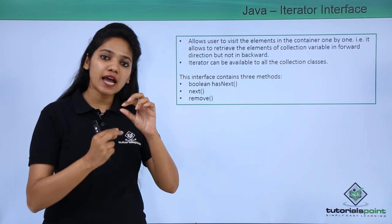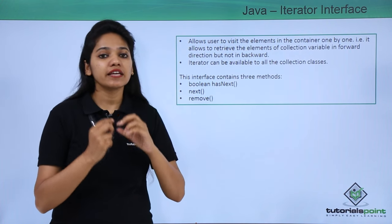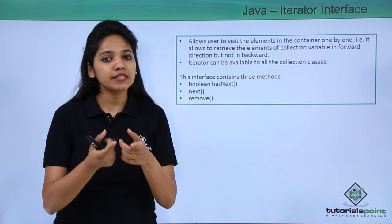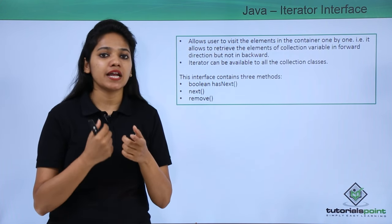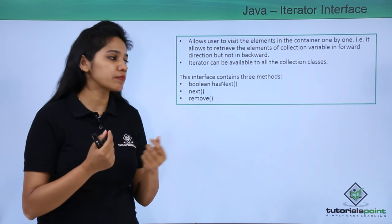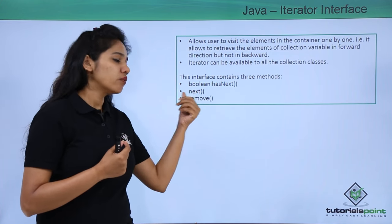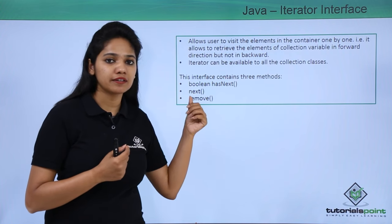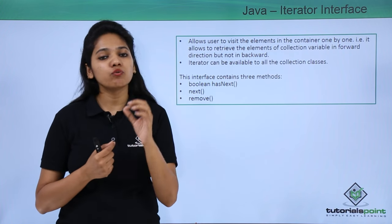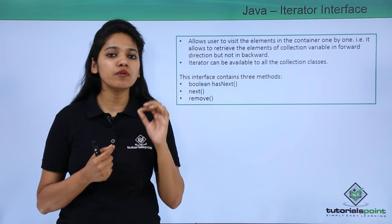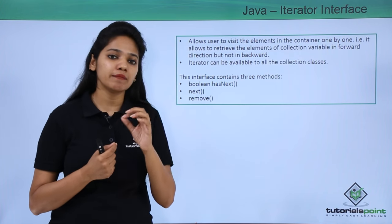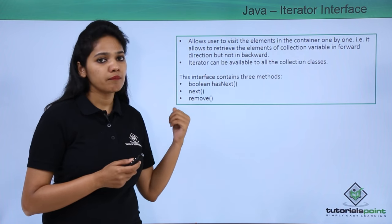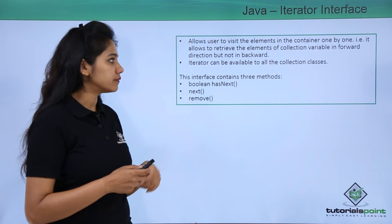If there is an element after e, that is after hasNext returns true, then you display that element. How do you display that element? With the help of the next method. And if you want to remove a particular element, then you use the remove method.